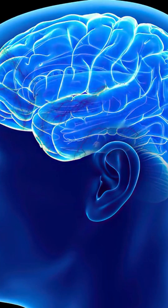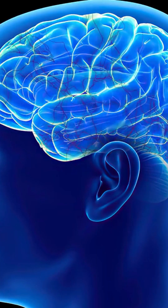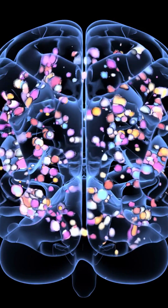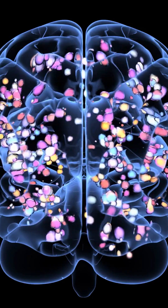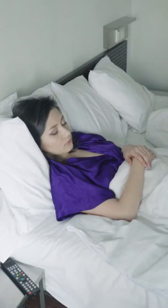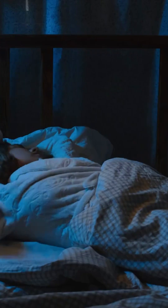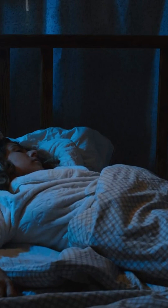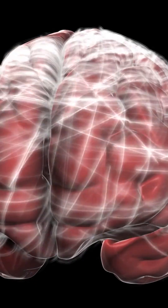Sometimes the wires get crossed — that's where sleep paralysis comes in. Your mind wakes up, but your body is still in that REM paralysis mode. The result? You're fully conscious but can't move a muscle. It's often terrifying and can come with scary hallucinations. Think: mind awake, body asleep.